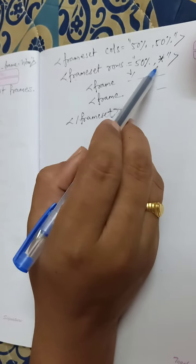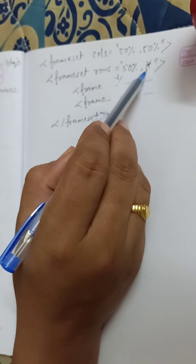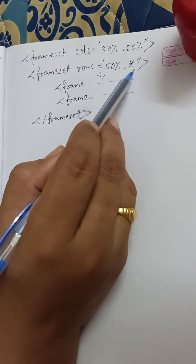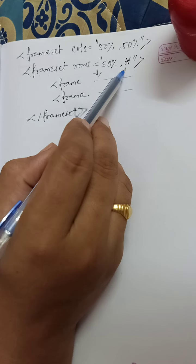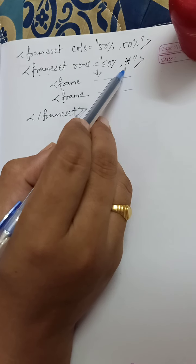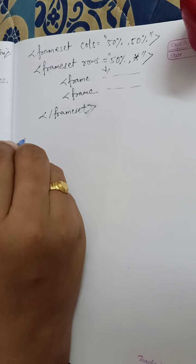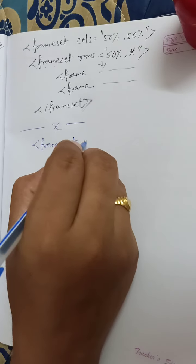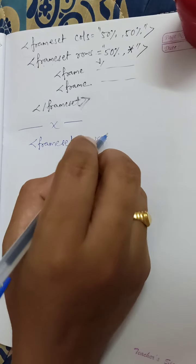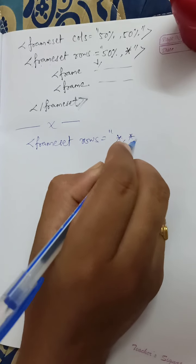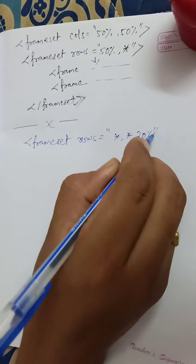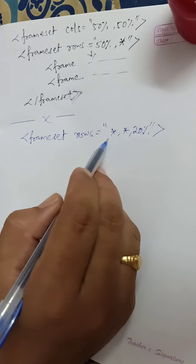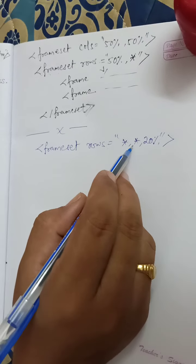In this example, a star (*) is mentioned. Star means apart from this, whatever is left is taken for another frame. I can also mention my frameset rows like this. For example, 20% for the third frame, 20% for another, and the rest will be randomly divided. So star can also be used this way.